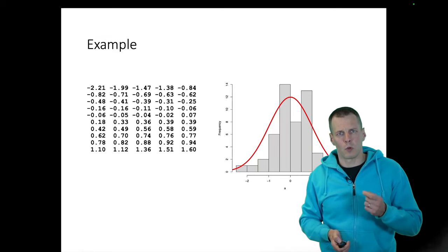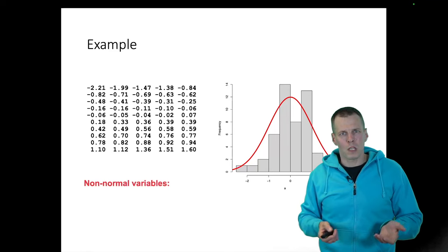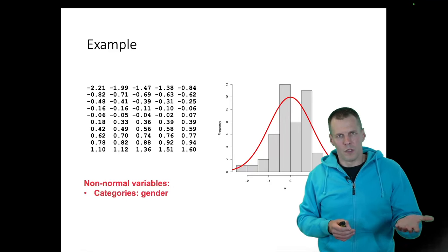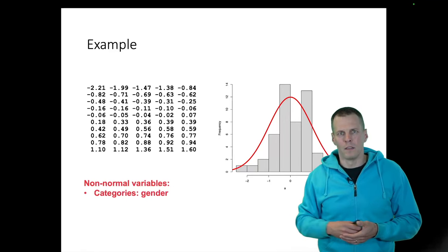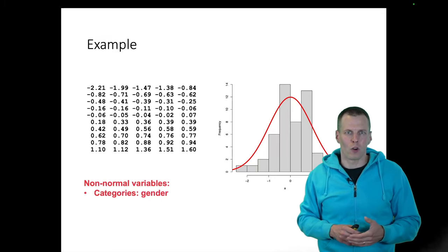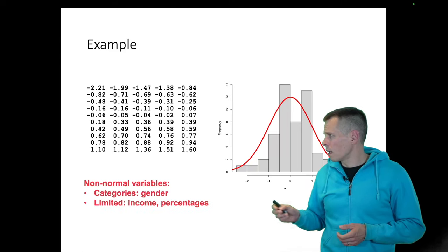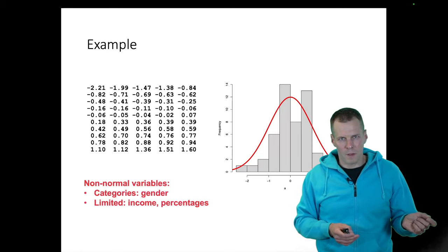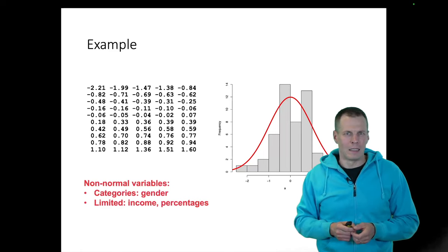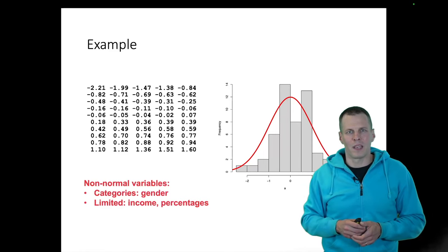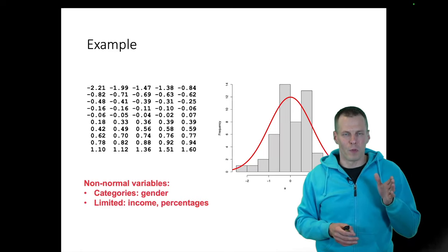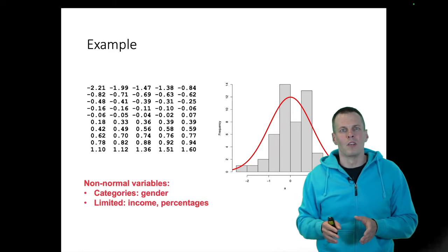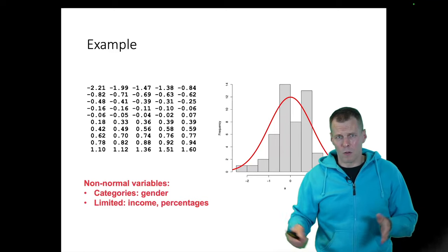It's important to understand what kinds of variables can never be normal. Examples of non-normal variables include categorical variables like gender — if we model it as a binary variable, zero for male and one for female. All limited dependent variables cannot be normal because the normal distribution goes from minus infinity to plus infinity. If we have income, which cannot be negative, or percentages bound between zero and 100, those cannot strictly speaking be normally distributed.